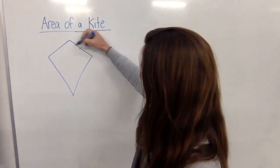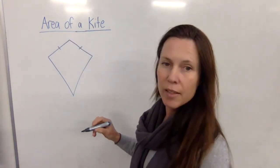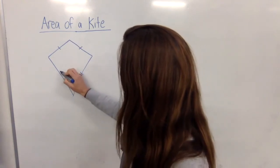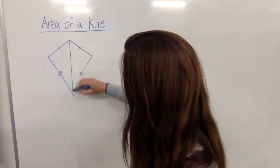A kite looks like this. It has two equal length sides and two other equal length sides and has symmetry right down the middle.